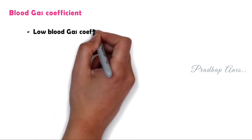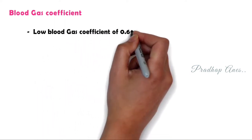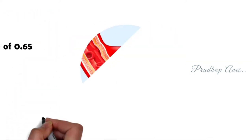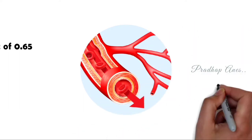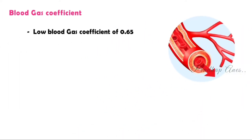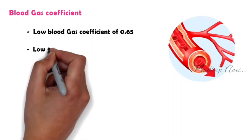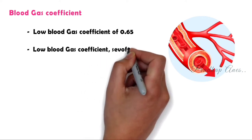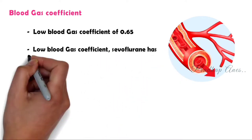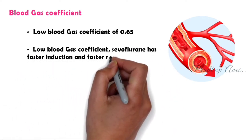It has a low blood gas coefficient of 0.65. The blood gas coefficient represents the solubility of the agent in the blood. A lower blood gas coefficient makes the agent less soluble in the blood, leading to faster induction and recovery. Due to this low blood gas coefficient, Sevoflurane has faster induction and faster recovery.